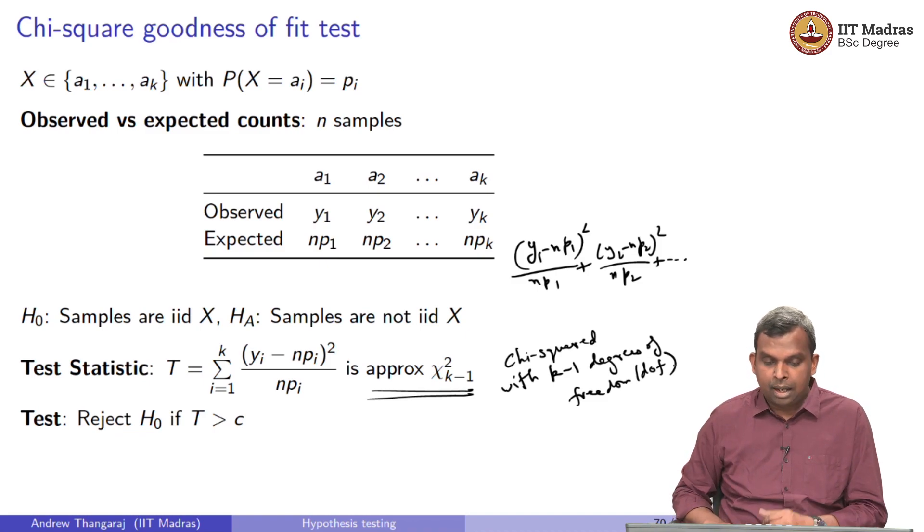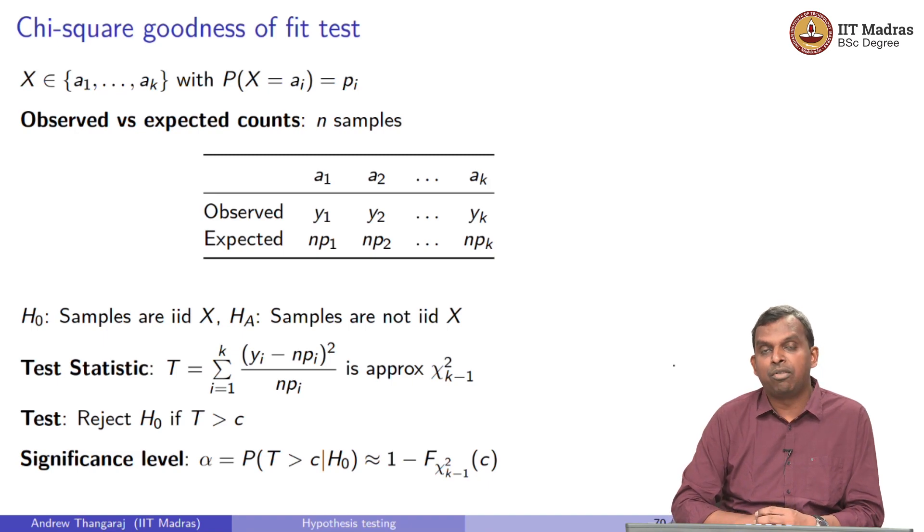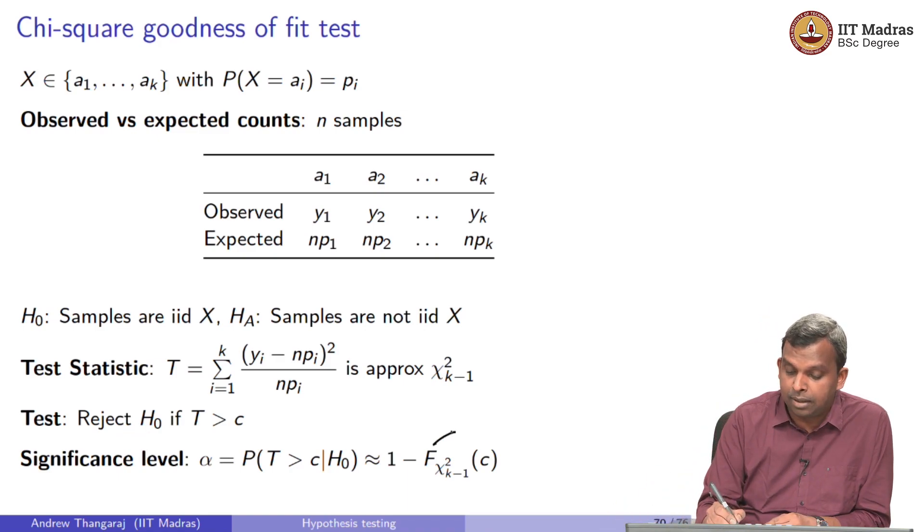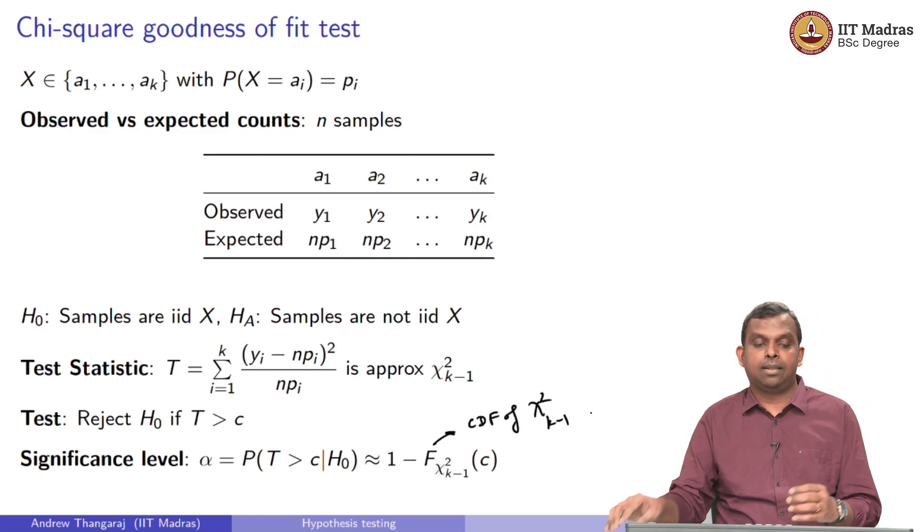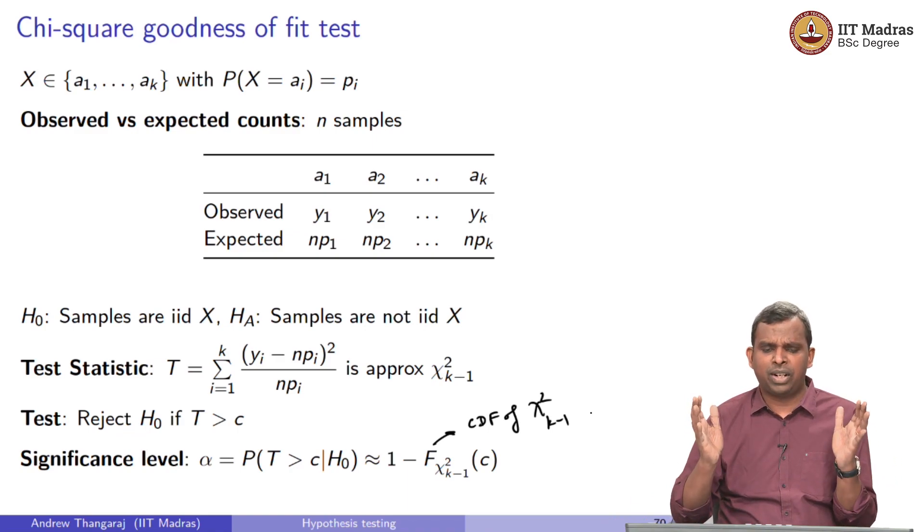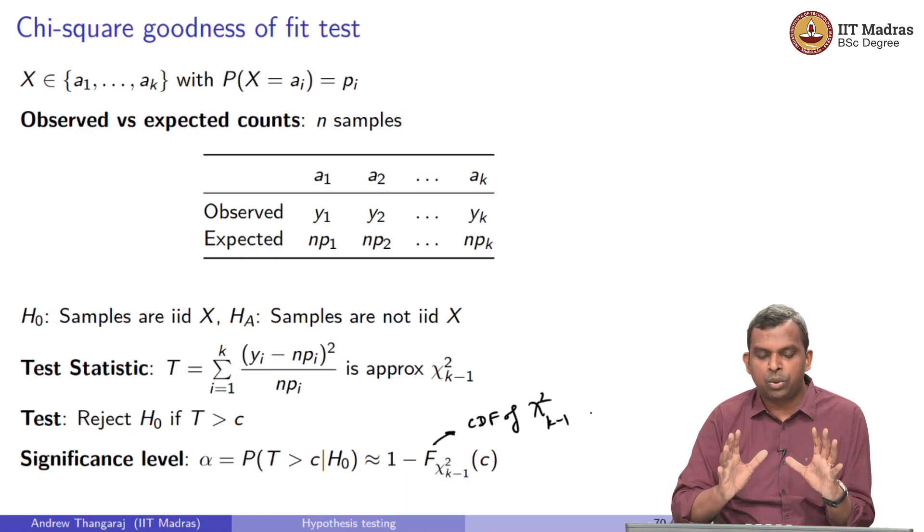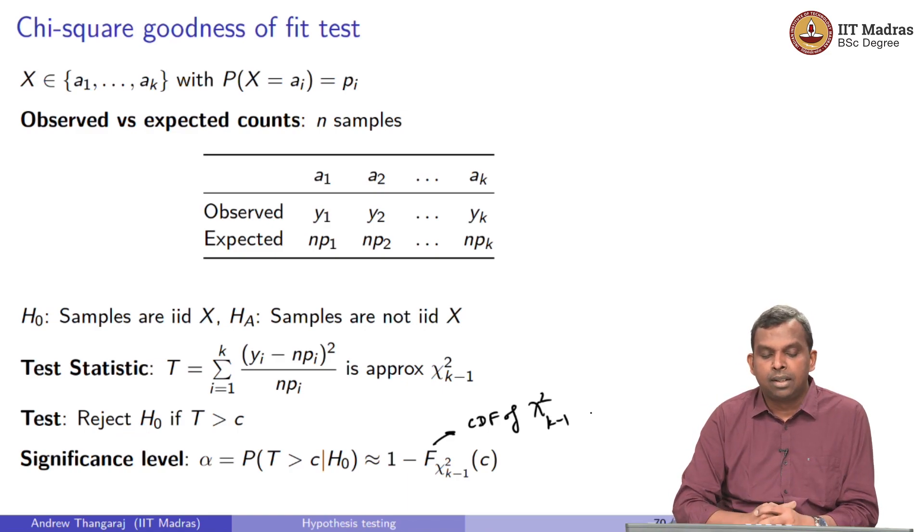A very reasonable test is to reject the null hypothesis if T is above some critical value c. Based on this and based on the chi-squared approximation, you can quickly derive a significance level, which is probability that T is greater than c given H naught, and that will be 1 minus F chi-squared k minus 1 evaluated at the critical value. And this is just the CDF of chi-squared k minus 1. So this is the chi-squared goodness of fit test. It is very typical, simple test, may not be the greatest of things, but it is commonly used and you can quickly evaluate the goodness of a fit using the chi-squared goodness of fit test.